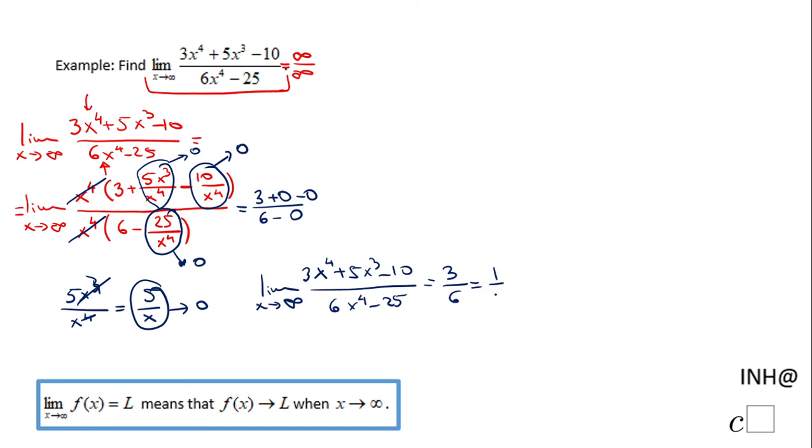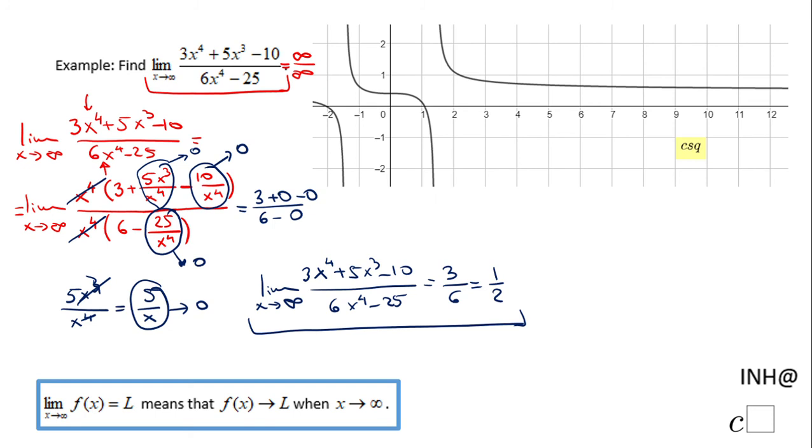And this is 1 half and that's it. We can see the same type of answer if you use a graphical approach. Once x is getting larger and larger the function is getting closer to this horizontal asymptote.